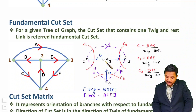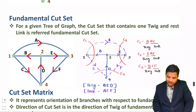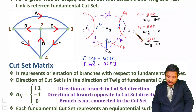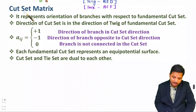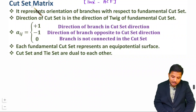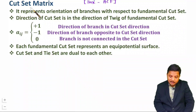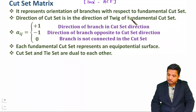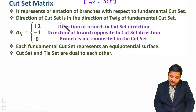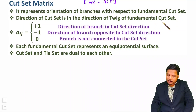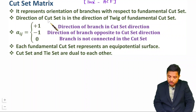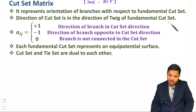Now I will explain cut set matrix using this same example. Cut set matrix represents the orientation of branches with respect to fundamental cut sets. The direction of a cut set is taken in the direction of its twig in the fundamental cut set — this is very essential. So the direction of the cut set must always follow the direction of the twig.